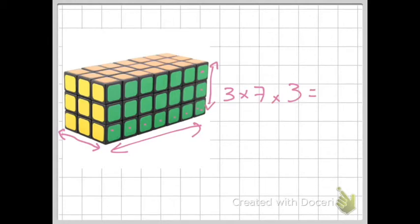So now I've done this, let's work out what the answer would be. So 3 times 7, that's 21, and then 21 multiplied by 3 gives me 63 cubed.